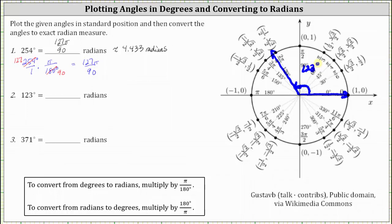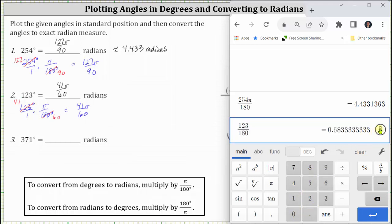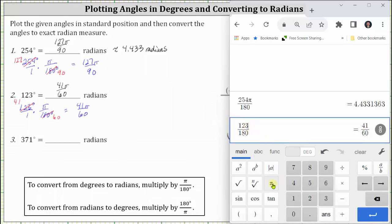To convert to radians, we multiply by pi divided by 180 degrees. 123 and 180 share a common factor of three — there are 60 threes in 180 and 41 threes in 123. The units of degrees simplify out, and we're left with 41π divided by 60 radians as the exact measure. To check, we enter 123 divided by 180 and click the Convert to Fraction button, but remember to include the pi. Including pi gives the decimal approximation: 41π/60 radians is approximately 2.147 radians.